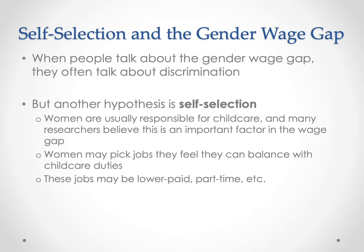A third factor is self-selection. When people talk about the gender wage gap, they often talk about discrimination, but a different factor that provides some explanation for gender wage gaps is self-selection. This idea is sometimes referred to as occupational sorting — people get sorted into different kinds of occupations which have different wages. Men and women may have preferences for different kinds of occupations, and having preferences for those different kinds of occupations produces some of the wage gaps. So the gender wage gap may not be a product of discrimination at all, but instead a product of self-selection.